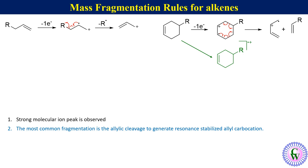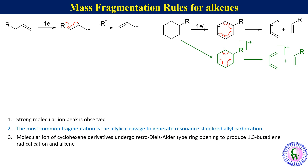For fragmentation, use curved arrows like this to generate the radical cation and alkene. We can see that the radical cation is drawn by just drawing the diene resulting from the retro-Diels-Alder reaction and then putting an inverted L with radical cation. Thus we can write that the molecular ion of cyclohexene derivatives undergoes retro-Diels-Alder type ring opening to produce a 1,3-butadiene radical cation and an alkene.